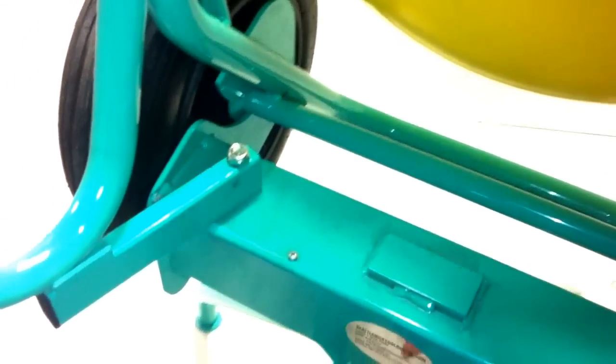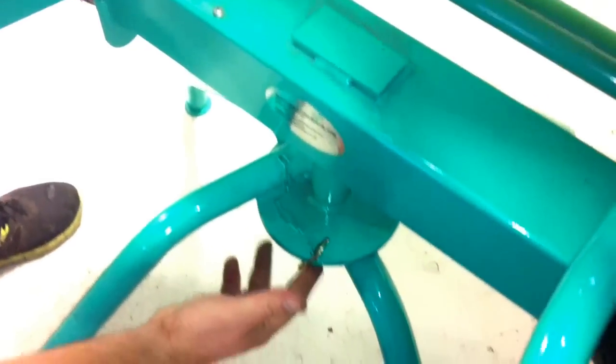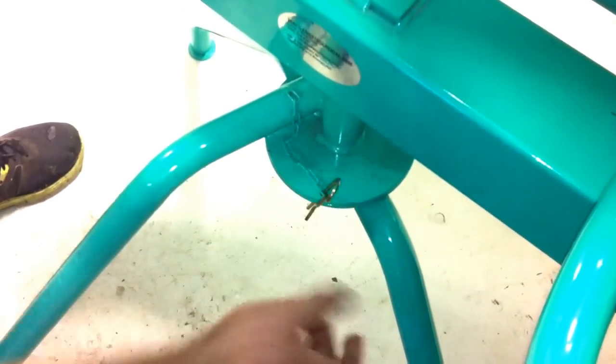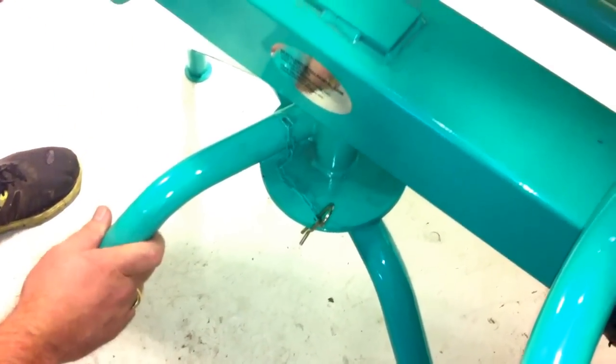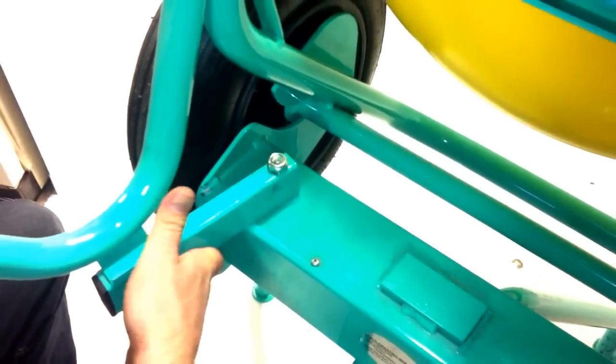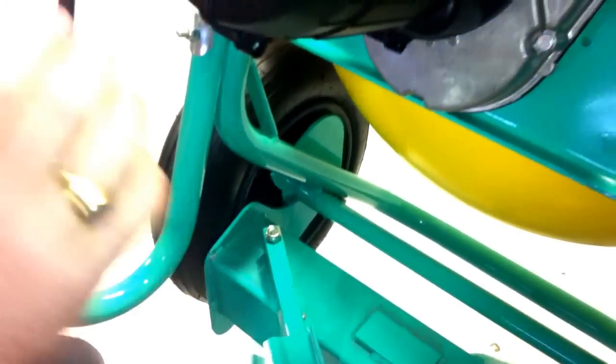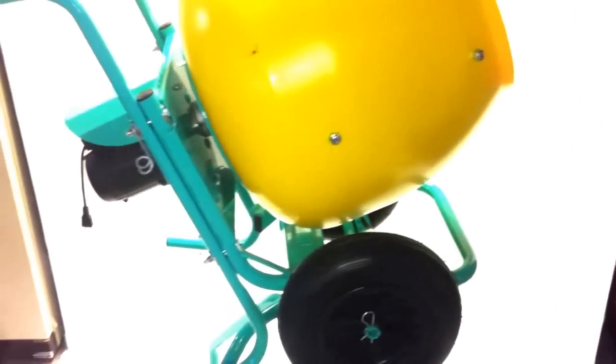It does require two people to do it. And you can see that the jack stand as well can also be compressed. You pull your cotter pin and push it together. So you have a rollable portable machine as well as a jack stand workable machine.